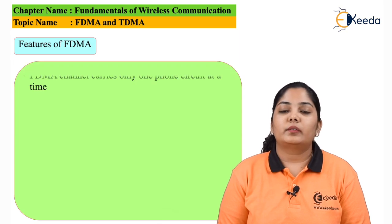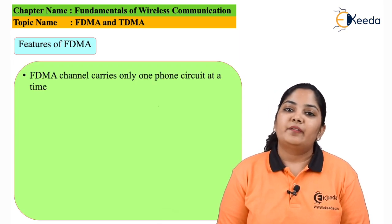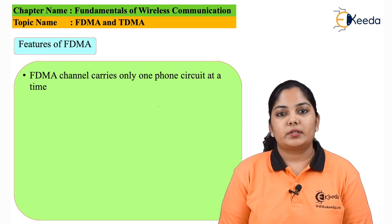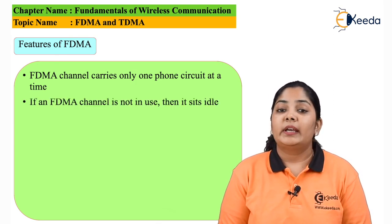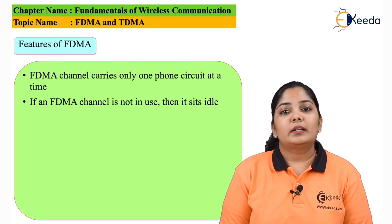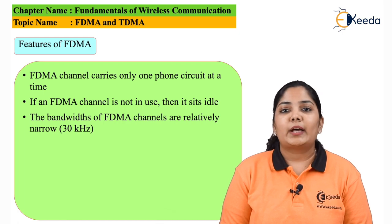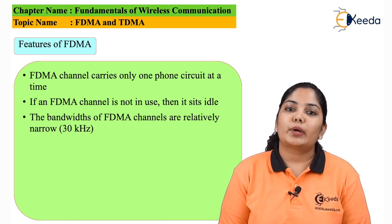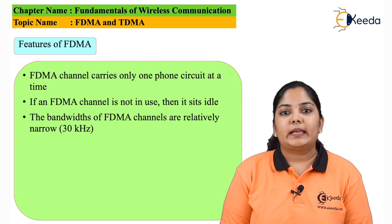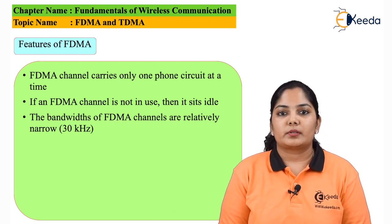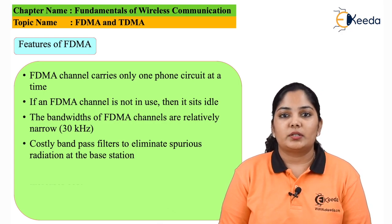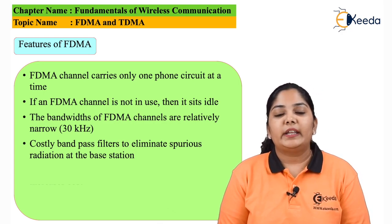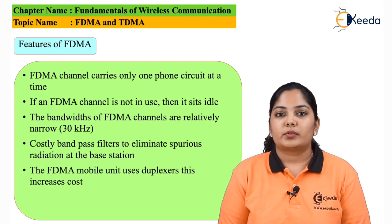The features of the FDMA channel are as follows: every FDMA channel carries only one phone circuit, because the frequency is unique to a single user. If not in use, the channel sits idle and is wasted. Very narrow band channels of around 30 kHz are given to every user in order to fit multiple users. Costly bandpass filters are required at the base stations for removal of interference from other circuits and users.